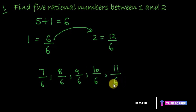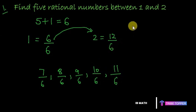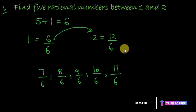Isn't that simple? You just need to find five rational numbers, so we express the given numbers as a ratio of two integers so that the denominator is six.